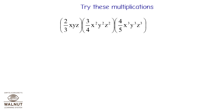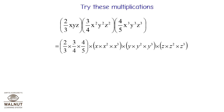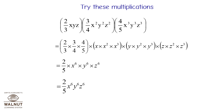Try this multiplication: 2 upon 3 xy raised to 3 upon 4 x squared y squared z squared into 4 upon 5 x cubed y raised to 4, which is equal to 2 upon 3 into 3 upon 4 into 4 upon 5 into x into x squared into x cubed into y into y squared into y cubed into z into z squared into z cubed, which is equal to 2 upon 5 x raised to 6 y raised to 6 z raised to 6.